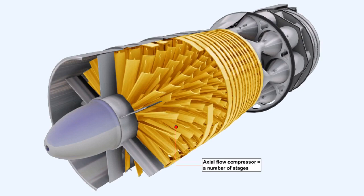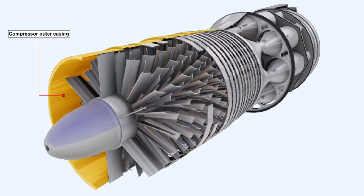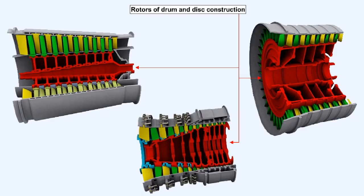The axial flow compressor, an example of which is shown here, consists of a number of stages. A stage embodies one row of rotor blades of airfoil section, which are fastened to a disc, followed by one row of stator vanes, also of airfoil section. The stator vanes are fastened to the compressor outer casing. The spaces between the rotor blades and the stator vanes form divergent passages. A number of discs — the number equating to the number of stages — are fastened together to form an integral rotor drum, which is driven by a turbine.